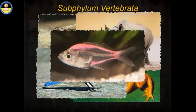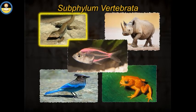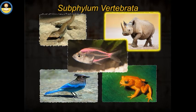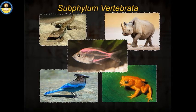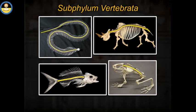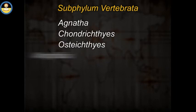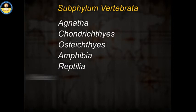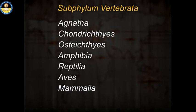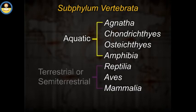Subphylum Vertebrata. Vertebrates, which include fishes, reptiles, amphibians, birds and mammals, share a common feature of a vertebral column. A chain of bony elements — vertebrae — runs along the dorsal surface from head to tail and forms the main skeletal axis of the body. There are seven vertebrate classes: Agnatha, Chondrichthyes, Osteichthyes, Amphibia, Reptilia, Aves, and Mammalia. Four are aquatic and three are terrestrial or semi-terrestrial, and may be grouped as the superclass Tetrapoda, or four-footed animals.